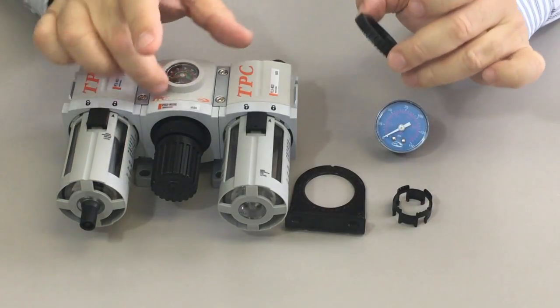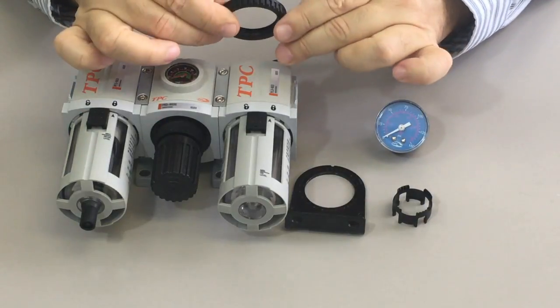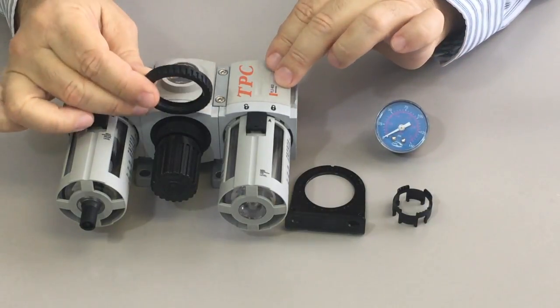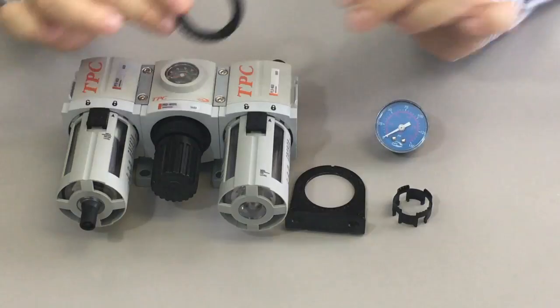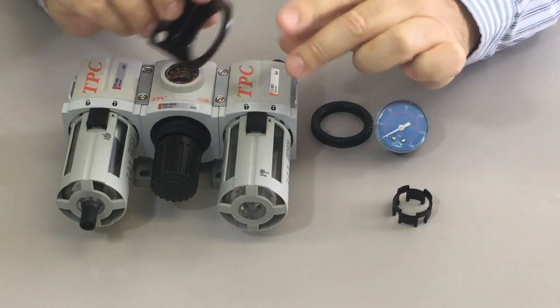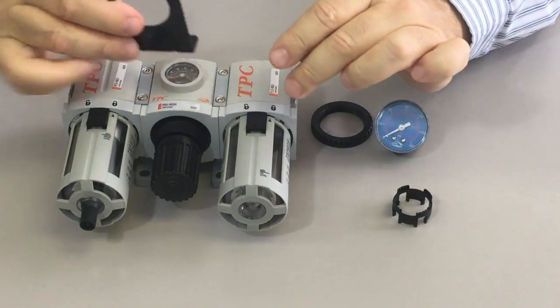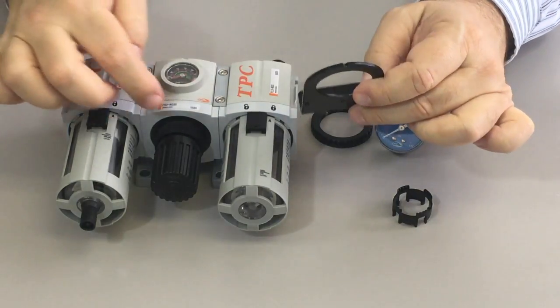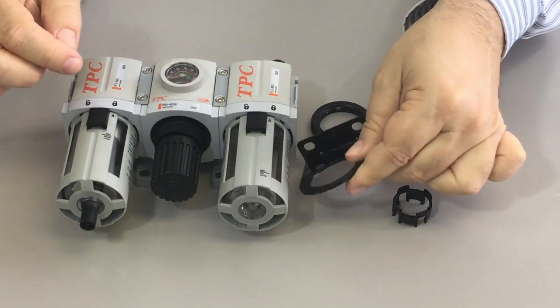The regulator also, as an individual piece, is available with a panel mount nut, so you can lock it through a panel. It has an individual L-type bracket. Again, you could use this with the combination, but not recommended. But for the individual piece, it works just fine.